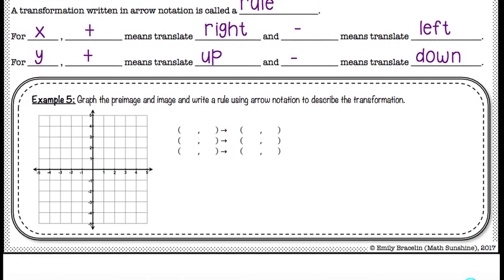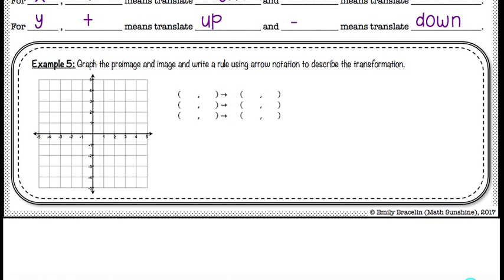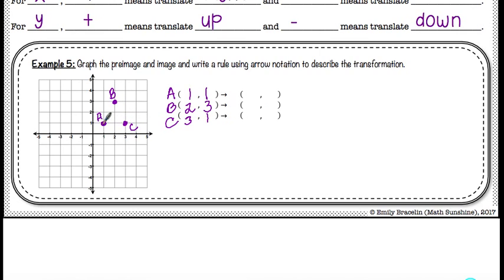Let's look at another example. Graph the pre-image and image and write a rule using arrow notation to describe the transformation. We have triangle ABC: A is (1,1), B is (2,3), and C is (3,1). Let's graph those points and connect the dots — you can see we have a triangle. This is the pre-image, the before. A, B, and C are shown to the left of the arrows.